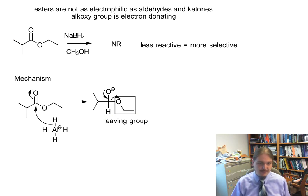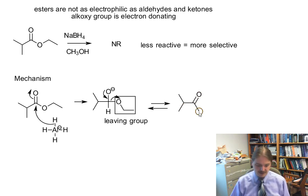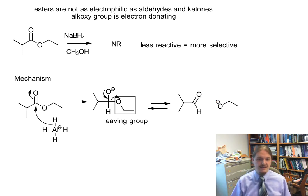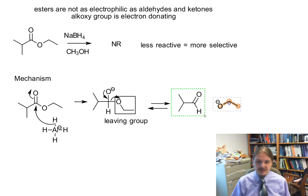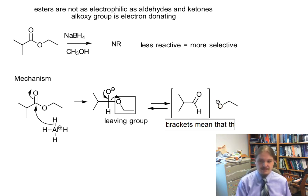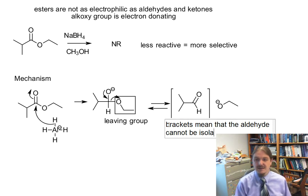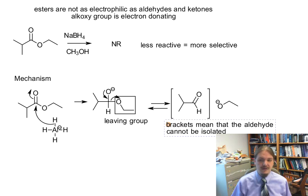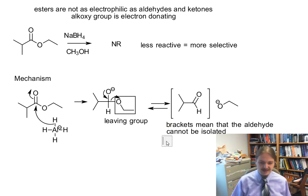It's worth noting that the step in which the leaving group leaves is actually reversible, because the alkoxide anion is itself a decent nucleophile and can react with aldehydes and ketones under the right conditions — but that's a topic for another video. Now we have an aldehyde, and I want to draw brackets around it. These brackets mean that the aldehyde cannot be isolated. The aldehyde is more reactive than the ester under these conditions.